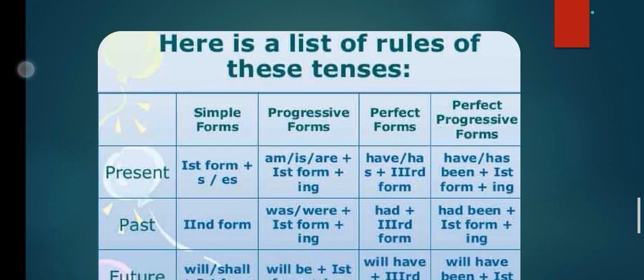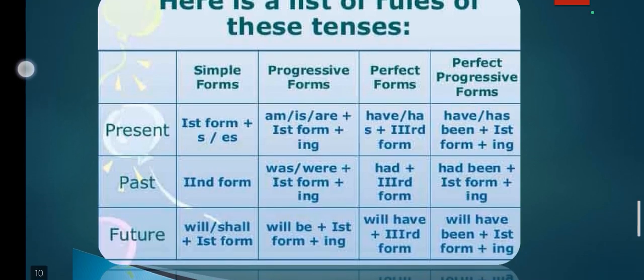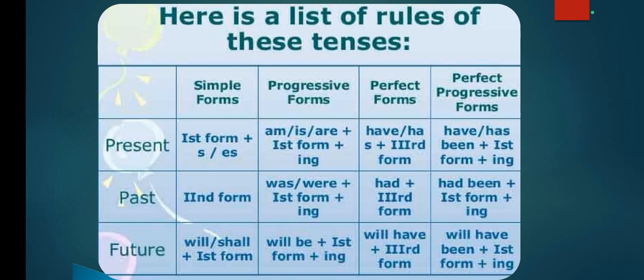Here is a list of rules of these tenses. Present simple form: first form plus S/ES. Progressive form: am/is/are plus first form plus ING. Perfect form: has/have been plus first form plus ING. Perfect progressive form: have/has been plus first form plus ING. Past simple form: second form. Progressive form: was/were plus first form plus ING. Perfect form: had plus third form. Perfect progressive form: had been plus first form plus ING.